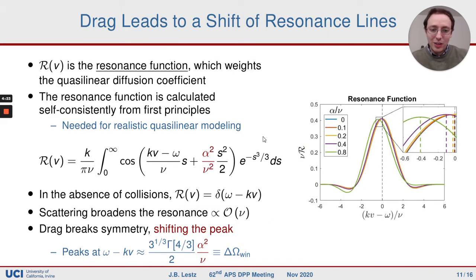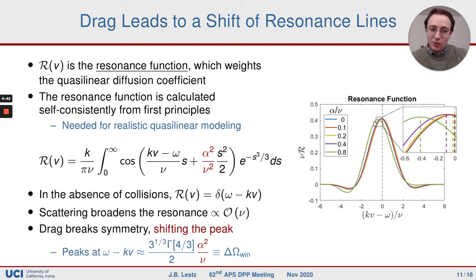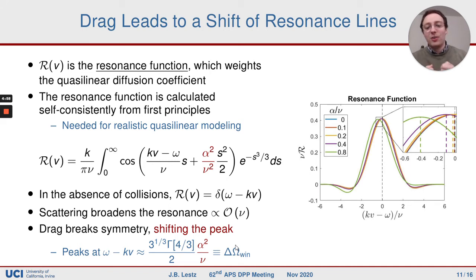If you have no collisions at all, the resonance function is just a delta function enforcing the resonance condition omega minus kV equals zero. If you have some scattering, the resonance function broadens, so you don't have to satisfy that condition exactly. But once you introduce drag, in addition to the broadening, you get a shift of the resonance function. The strongest interaction is no longer at omega minus kV equals zero — it's at a value proportional to the amount of drag. This is because drag has a preferred direction in velocity space, breaking the symmetry in the resonance function.